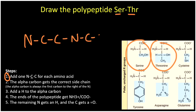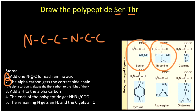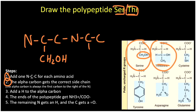Step two: add our side chains. The side chains always go on the alpha carbon, which is just to the right of our nitrogen. We have two alpha carbons — one for each amino acid. For serine, our first amino acid, the side chain is CH2OH, so we draw a bond going down to CH2OH. Then for threonine, the side chain on the next alpha carbon goes down to a carbon, over to an OH, down to CH3, and then over to one more hydrogen.